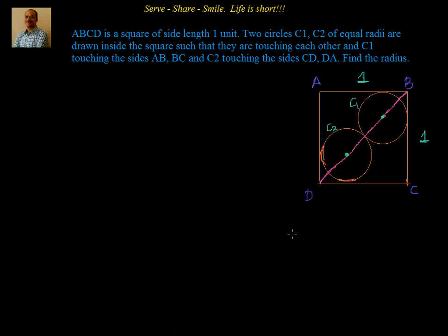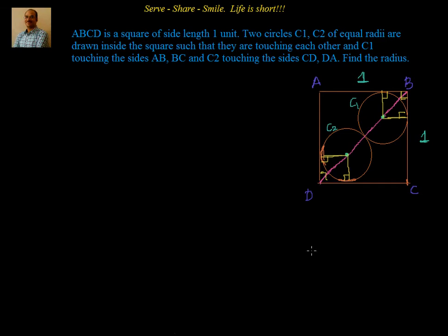So this is our C1 and this is the C2 circle. What we have to find out is the radius. Once we understand the diagram, everything becomes easy. The line joining the centers will always be a straight line. Since the circles touch the sides of the square, we know these angles are 90 degrees, and we can see a small square forming there.